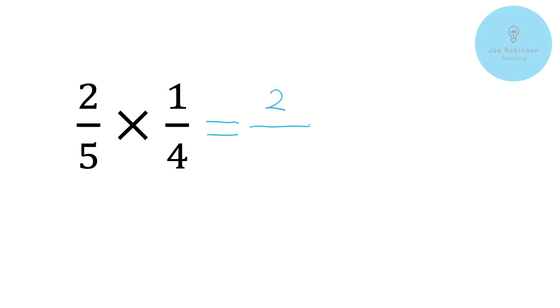And then the bottom number here five times four is going to give us 20. Now again you can see here we've got two twentieths but what we always want to think about is can we simplify that down at all. So can we make this simpler.